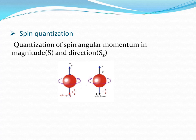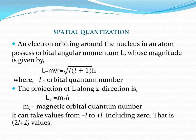The electron has an orbital angular momentum. The total magnitude of the orbital angular momentum is given by L equals mvr which is equal to root of l(l+1) times h-cross. The z-direction component of angular momentum is given by Lz equals ml times h-cross, where ml is the magnetic orbital quantum number. The ml can take values from minus l to plus l, including 0, giving a total of 2l plus 1 values.